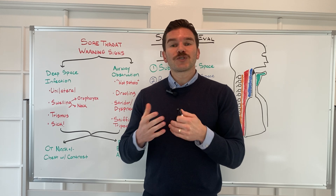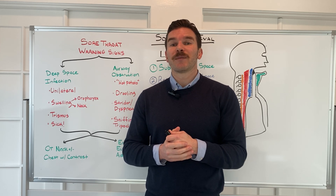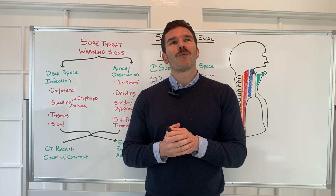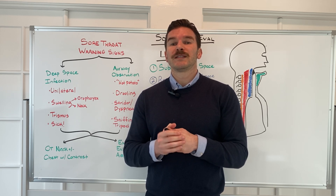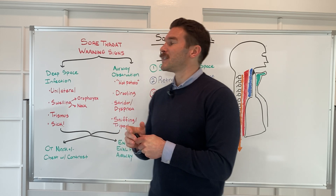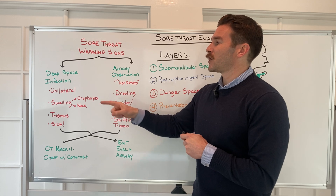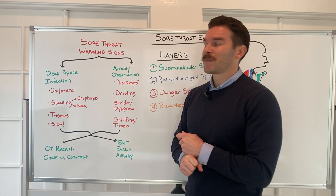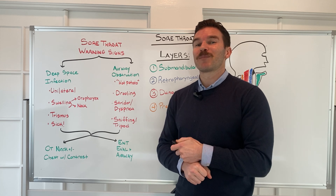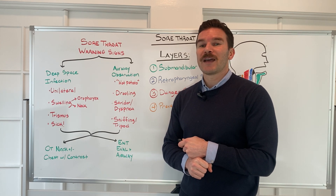Now that we understand the different layers of the onion of head and neck infections, let's think about what signs and symptoms could clue us in to these infections being present. Take a couple of seconds to pause the video and ask yourself what symptoms might worry you. We're going to organize them into two primary categories: symptoms of airway obstruction and symptoms of a deep space infection. The symptoms of airway obstruction bring us to our second food — potatoes.